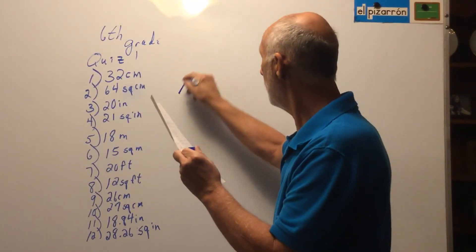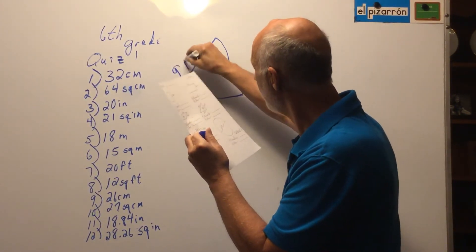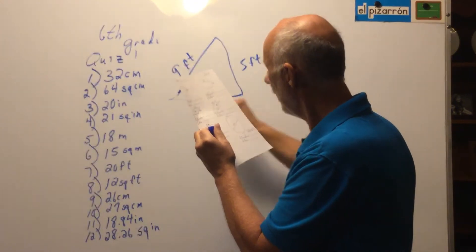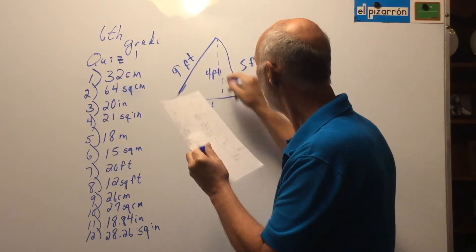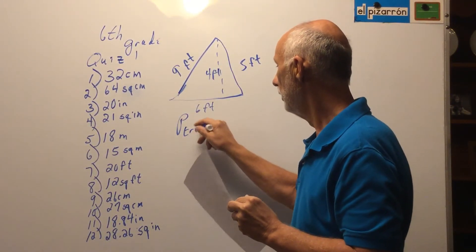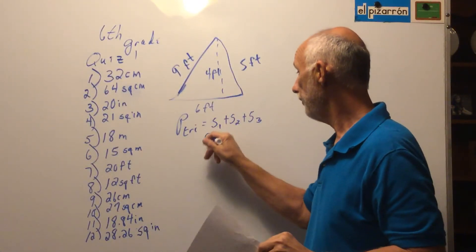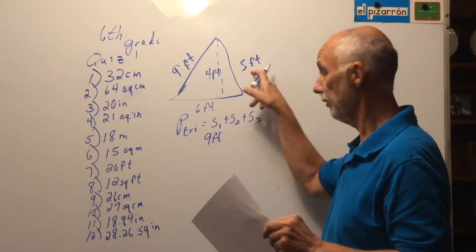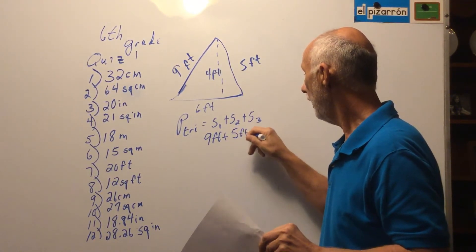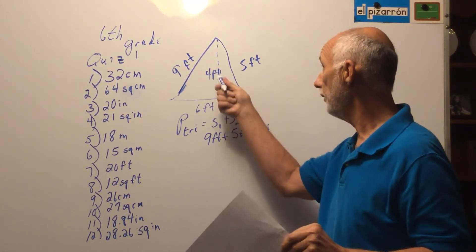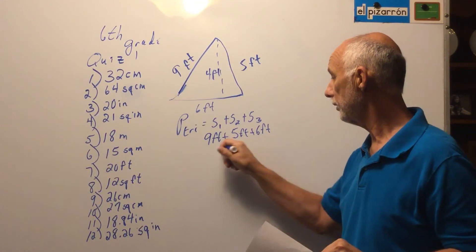The next figure is a triangle with sides of nine feet, five feet, and six feet, and an imaginary height of four feet. Start with the formula: perimeter of a triangle equals side one plus side two plus side three. It doesn't matter which side you call side one — you'll use all three. Do not use four feet; that is the imaginary height, not a side. Nine plus five plus six equals 20 feet.